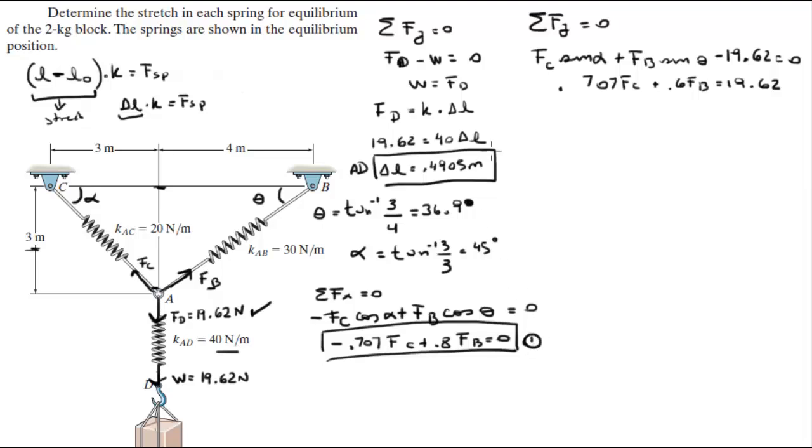Let's call this equation 1. I'm going to rewrite equation 1 right here: negative 0.707 F_c plus 0.8 F_b is equal to 0. So you add these two equations together, F_c cancels out, and you get 1.4 F_b is equal to 19.62. So F_b is equal to 14 N.